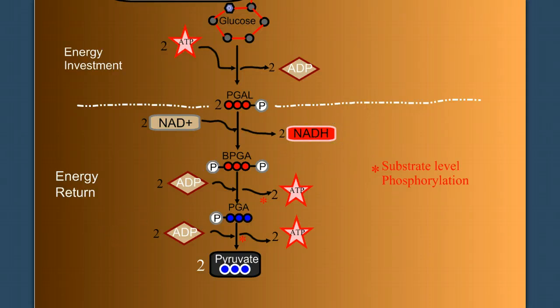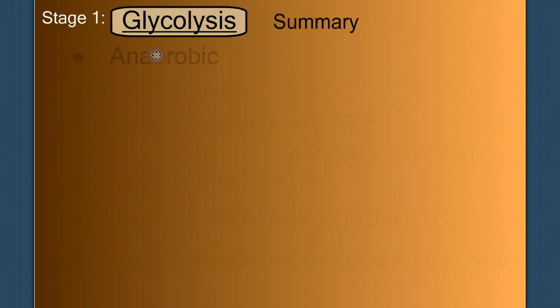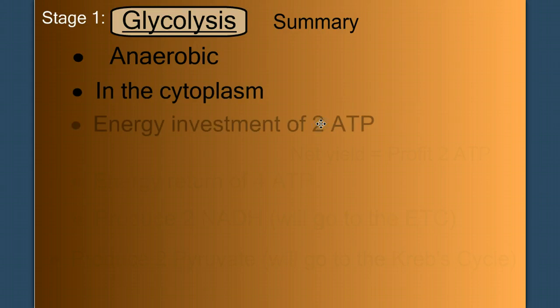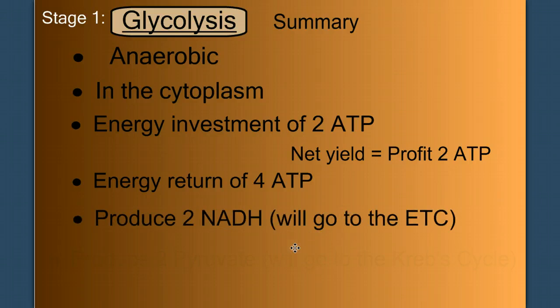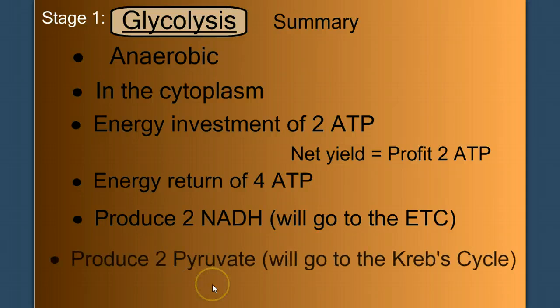So let's summarize glycolysis. Again, it's anaerobic. It doesn't require oxygen. It takes place in the cytoplasm. We have an energy investment step of two ATP, but an energy return of four for a net yield or profit of two ATP. We also produce two NADH molecules, which will go onto the electron transport chain. And we end with two pyruvate molecules, which will go onto the Krebs cycle.